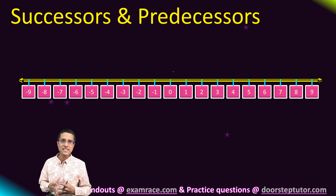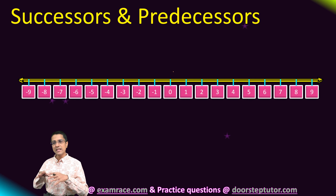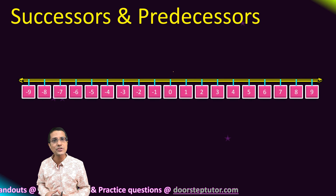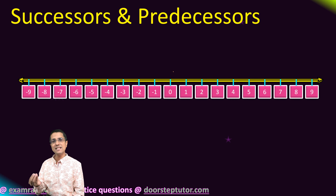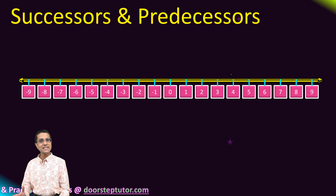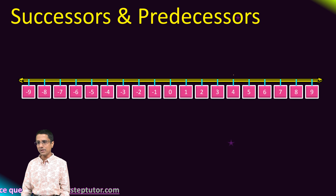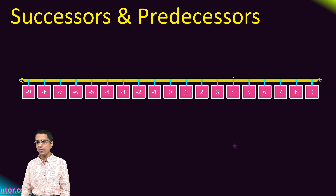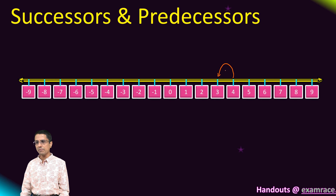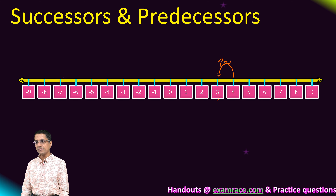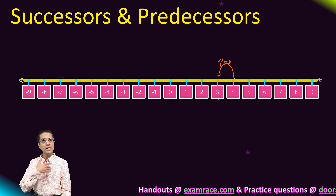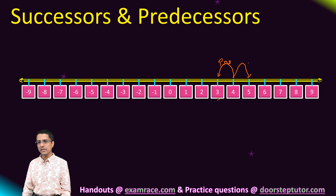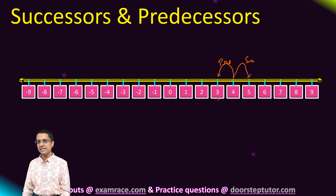Similar to natural numbers and whole numbers, the number line of integers also has the concept of predecessors and successors. Let's understand it with an example. Consider the number 4. If I go one number to the left of number 4, number 3 is the predecessor. One number to the right of number 4, number 5 is the successor.